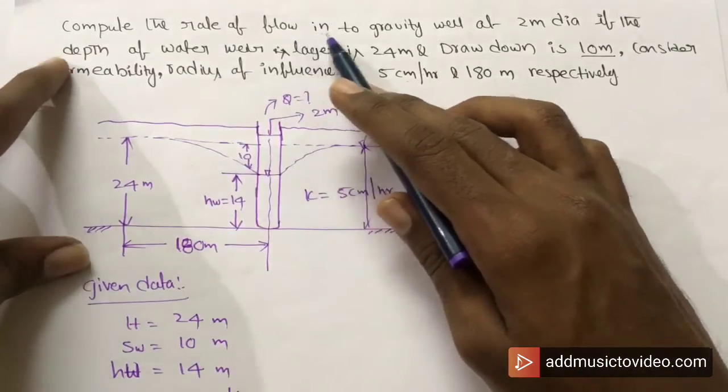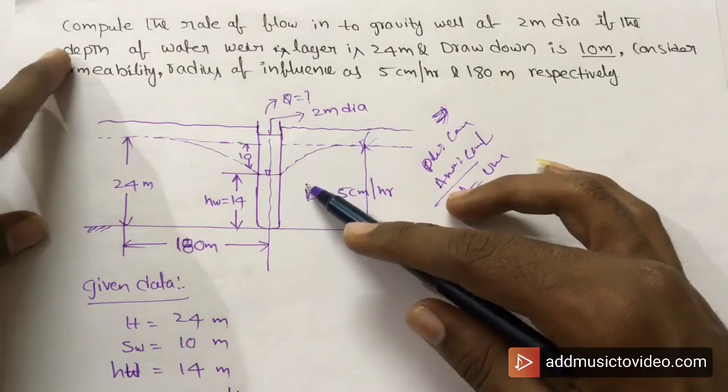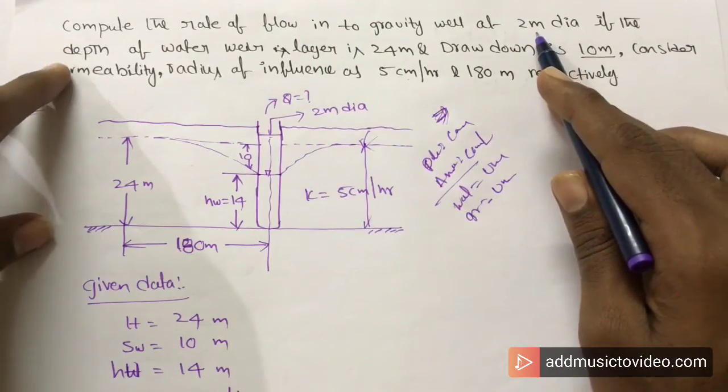We need to find the rate of flow in the gravity well. The well is 2 meters diameter.